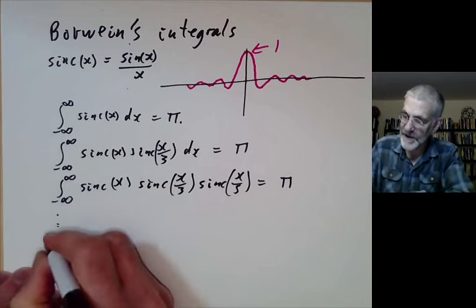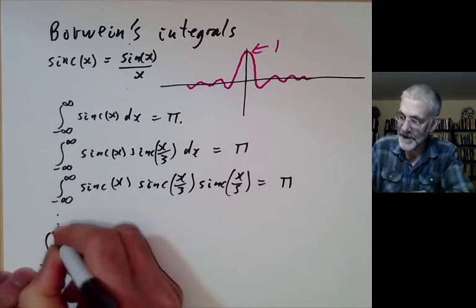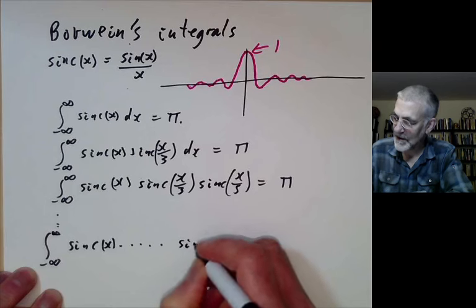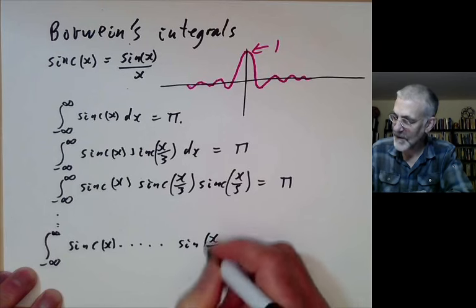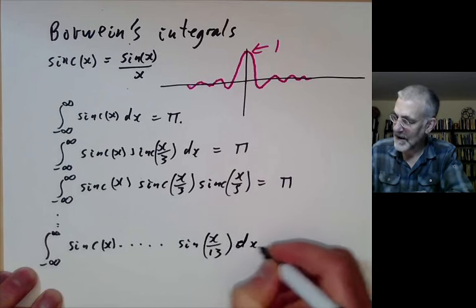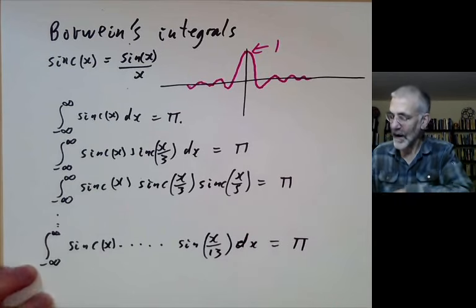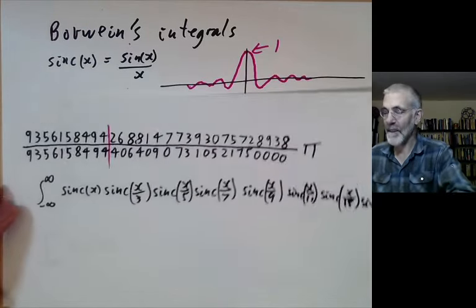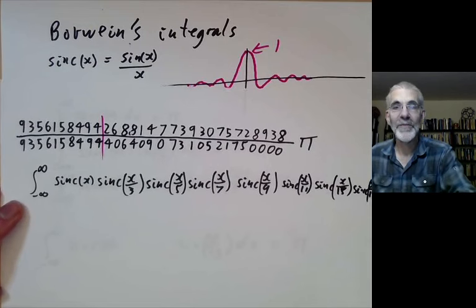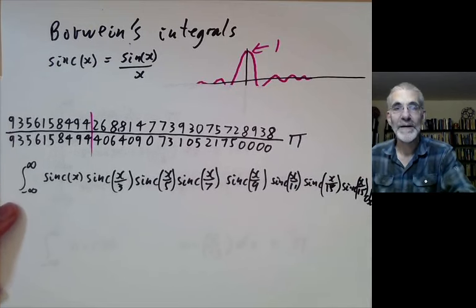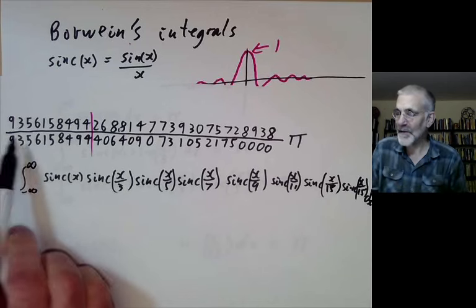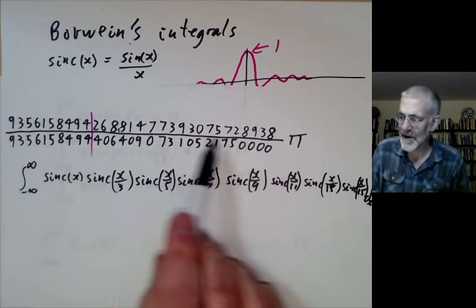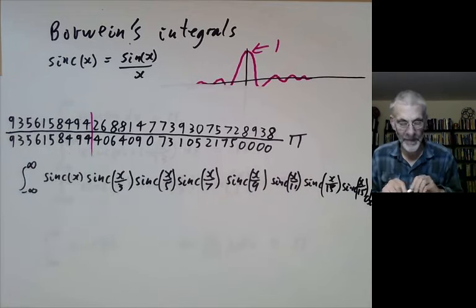And you can go on like this, but when you get to 15 it suddenly changes. It turns into this rather impressive number. You notice this is very nearly equal to pi — the first 10 digits of the numerator and denominator are the same — but it's very, very slightly less than pi.